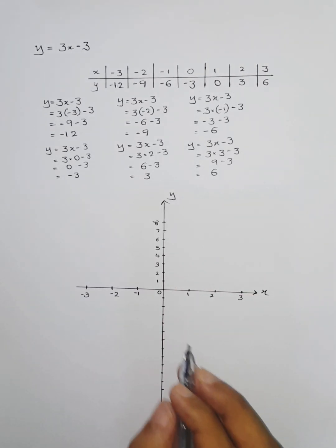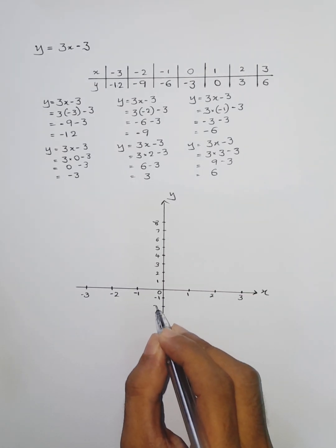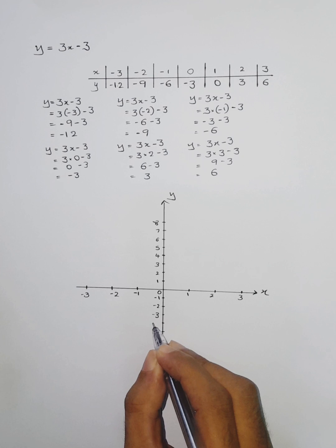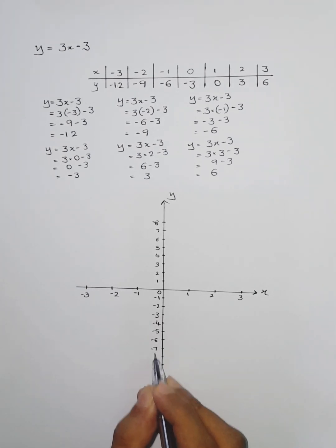And for y, 1, 2, 3, 4, 5, 6, 7, 8. We have to take only up to 6. And now the next one: -1, -2, -3, -4, -5, -6, -7, -8, -9, -10, -11, and -12. You can see now we have to take up to -12.